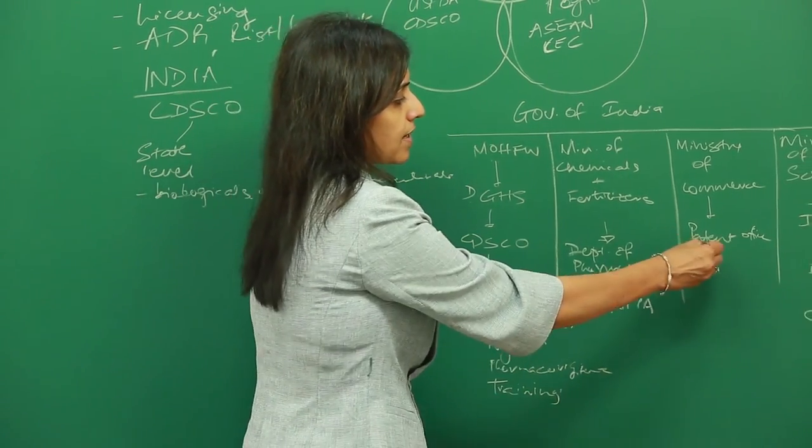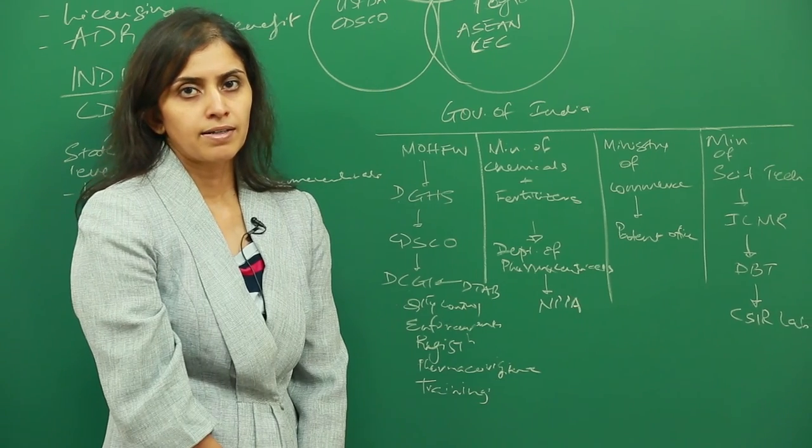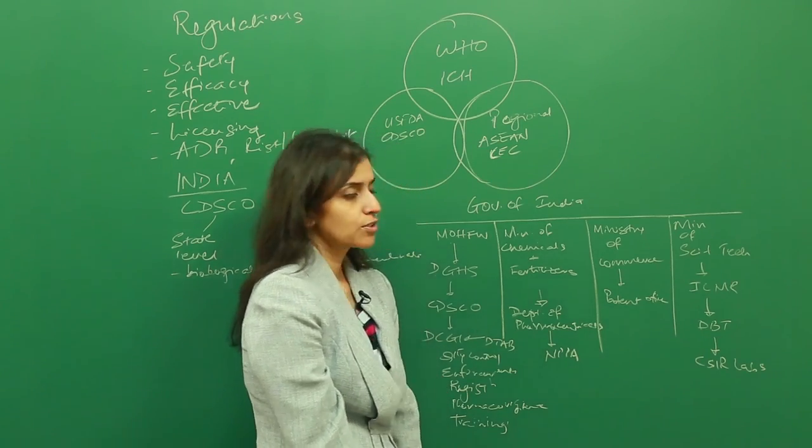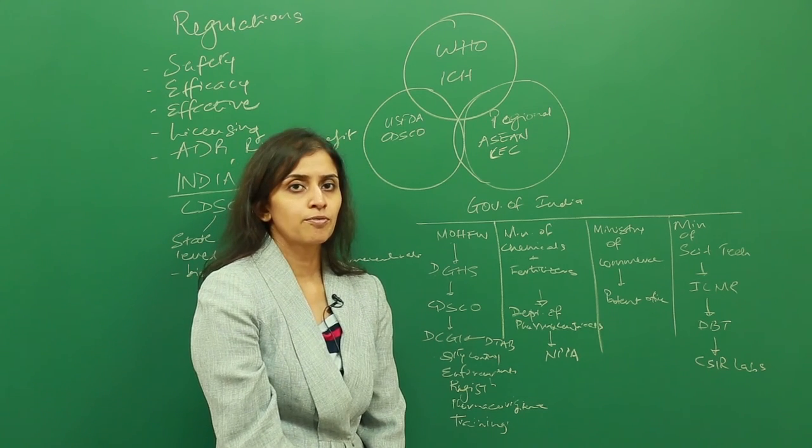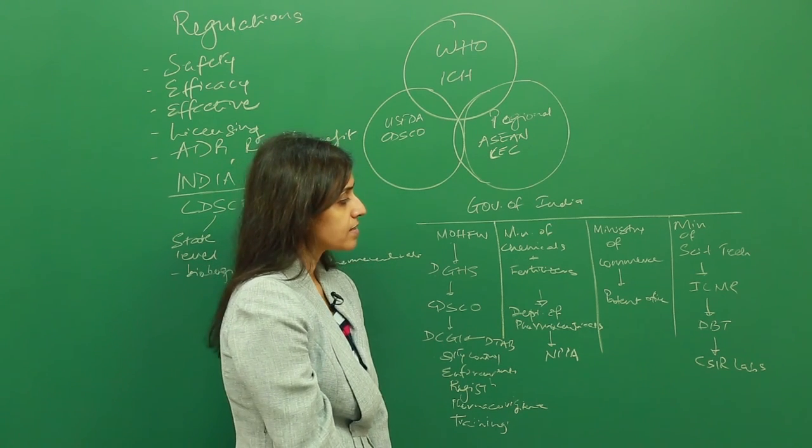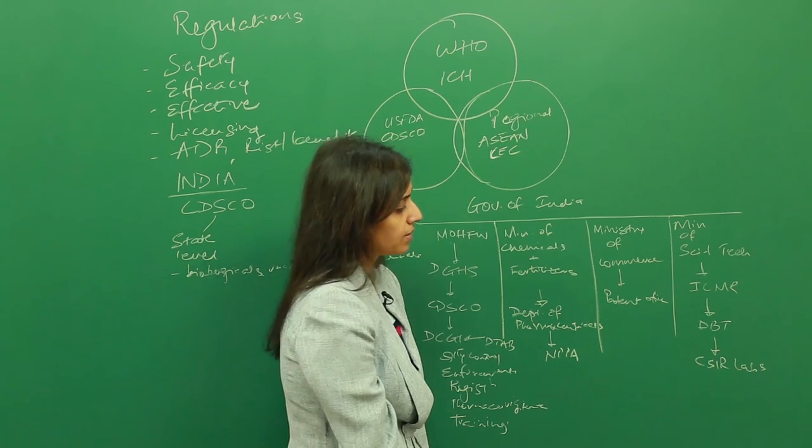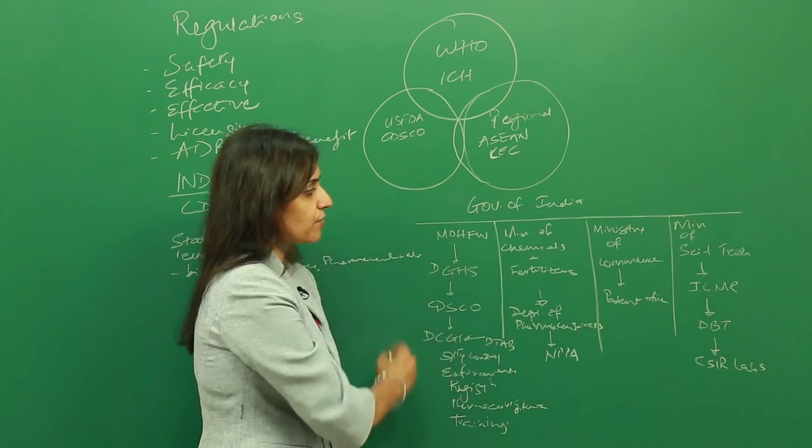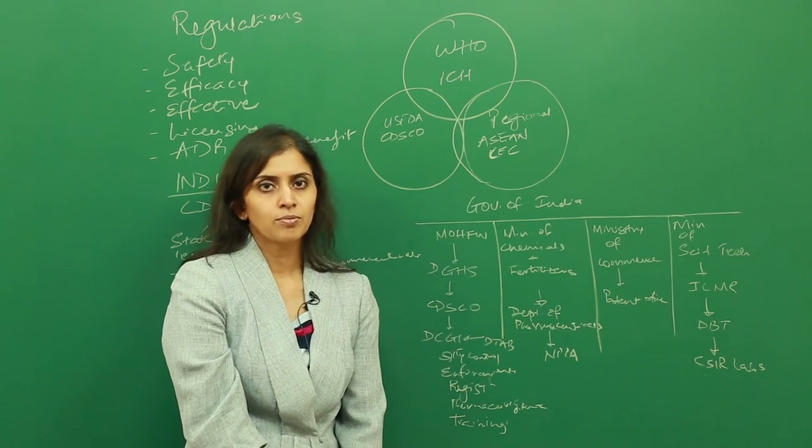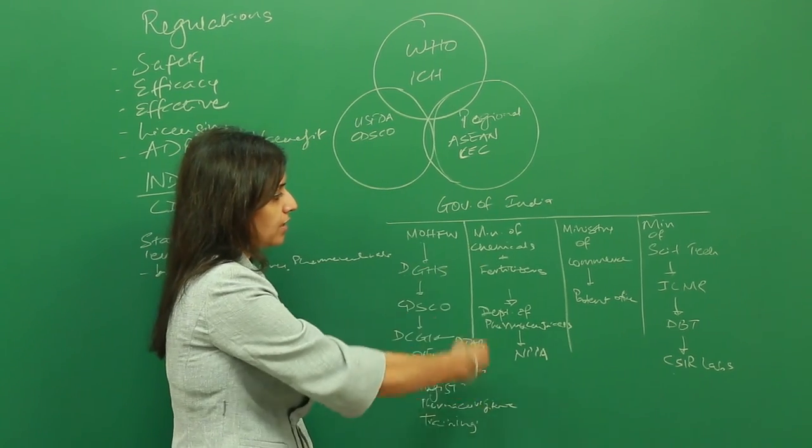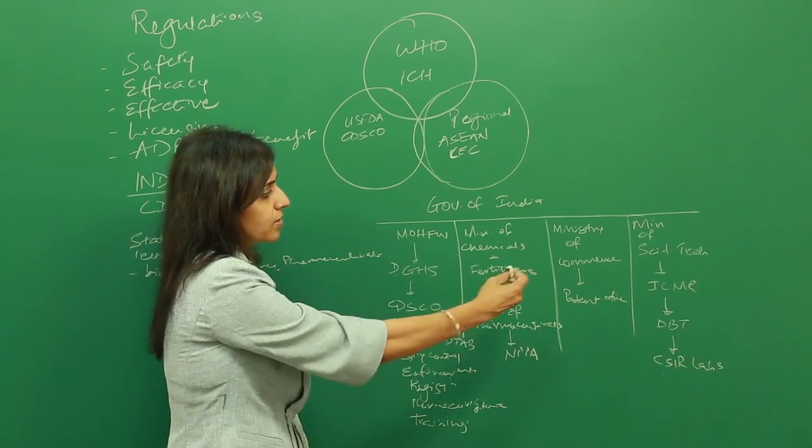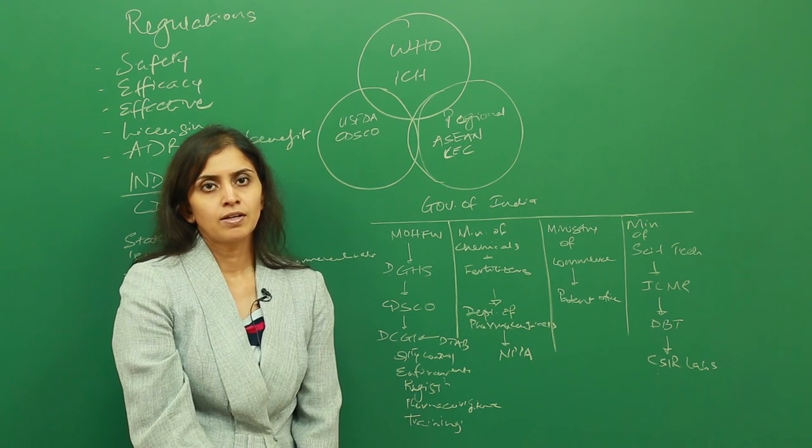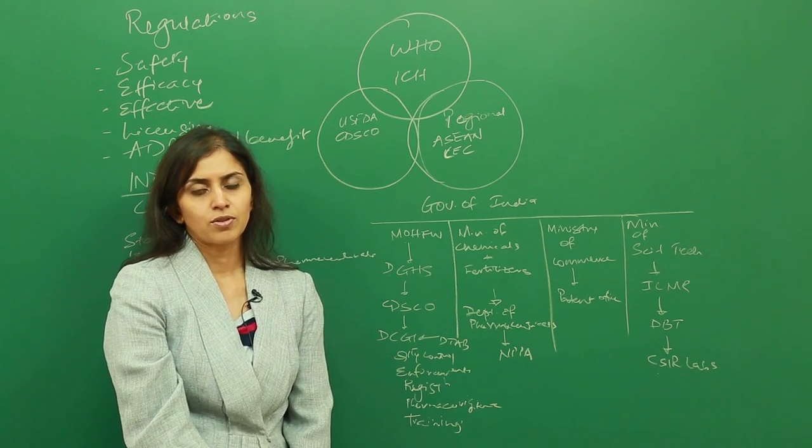The Ministry of Commerce has a patent office that does registration and patenting of new drugs. The Ministry of Science and Technology has the Indian Council of Medical Research, which then has the DBT institutes with CSIR labs under them. It is a very well laid out structure, and information flow is strictly vertical. There is some horizontal flow of information across these ministries that may result in regulations being enforced.